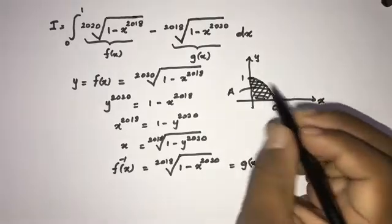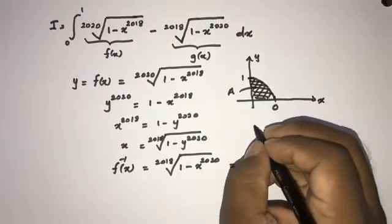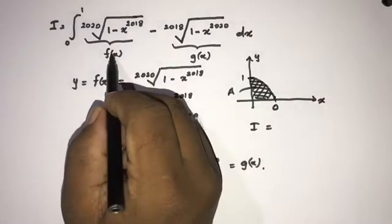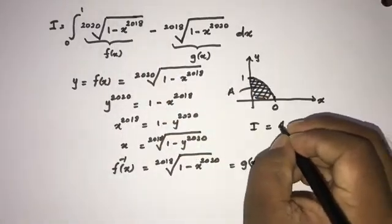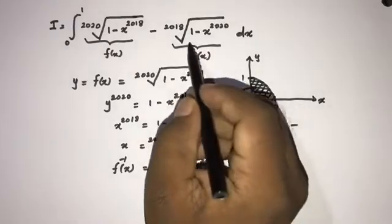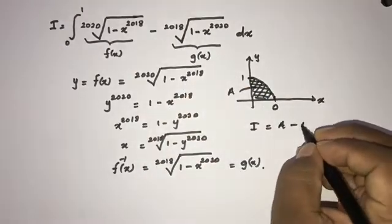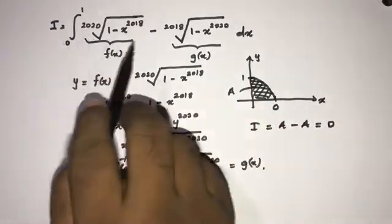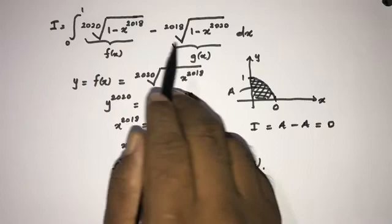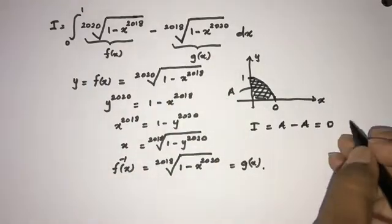Now we know I is the integral of f(x) minus g(x). The area under f(x) equals A, and the area under g(x) also equals A. So the integral of f(x) minus g(x) equals 0.